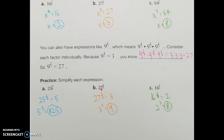For 27 to the 2 thirds power, think of the denominator first: 27 to the 1 third is 3, since 3 cubed is 27. Then raise that result to the 2nd power: 3 squared is 9. For 16 to the 3 fourths, 16 to the 1 fourth is 2, since 2 to the 4th is 16. Raise 2 to the 3rd power: 2 times 2 times 2 equals 8.